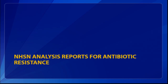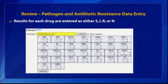Now we're going to talk about the analysis reports for antibiotic resistance. This is where you're entering the pathogen and the resistance data into NHSN — at the very bottom of an event form after you enter all the signs and symptoms and other criteria. You have the option to enter up to three different pathogens for each HAI, and depending on which pathogen you choose, different drugs will be required for you to enter their susceptibilities. You enter the susceptibility as a category interpretation: S for sensitive, I for intermediate, R for resistant, or N for not tested.